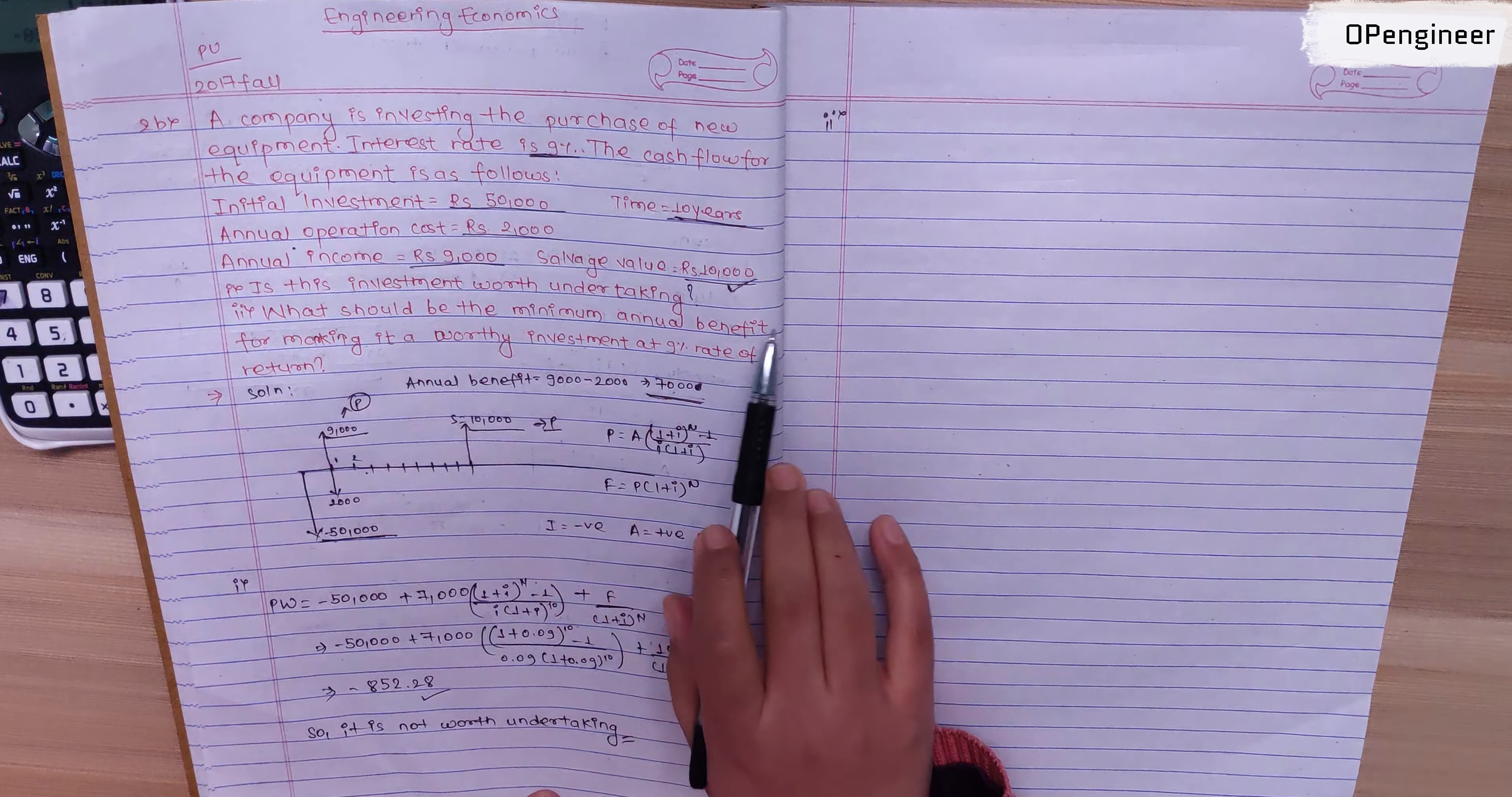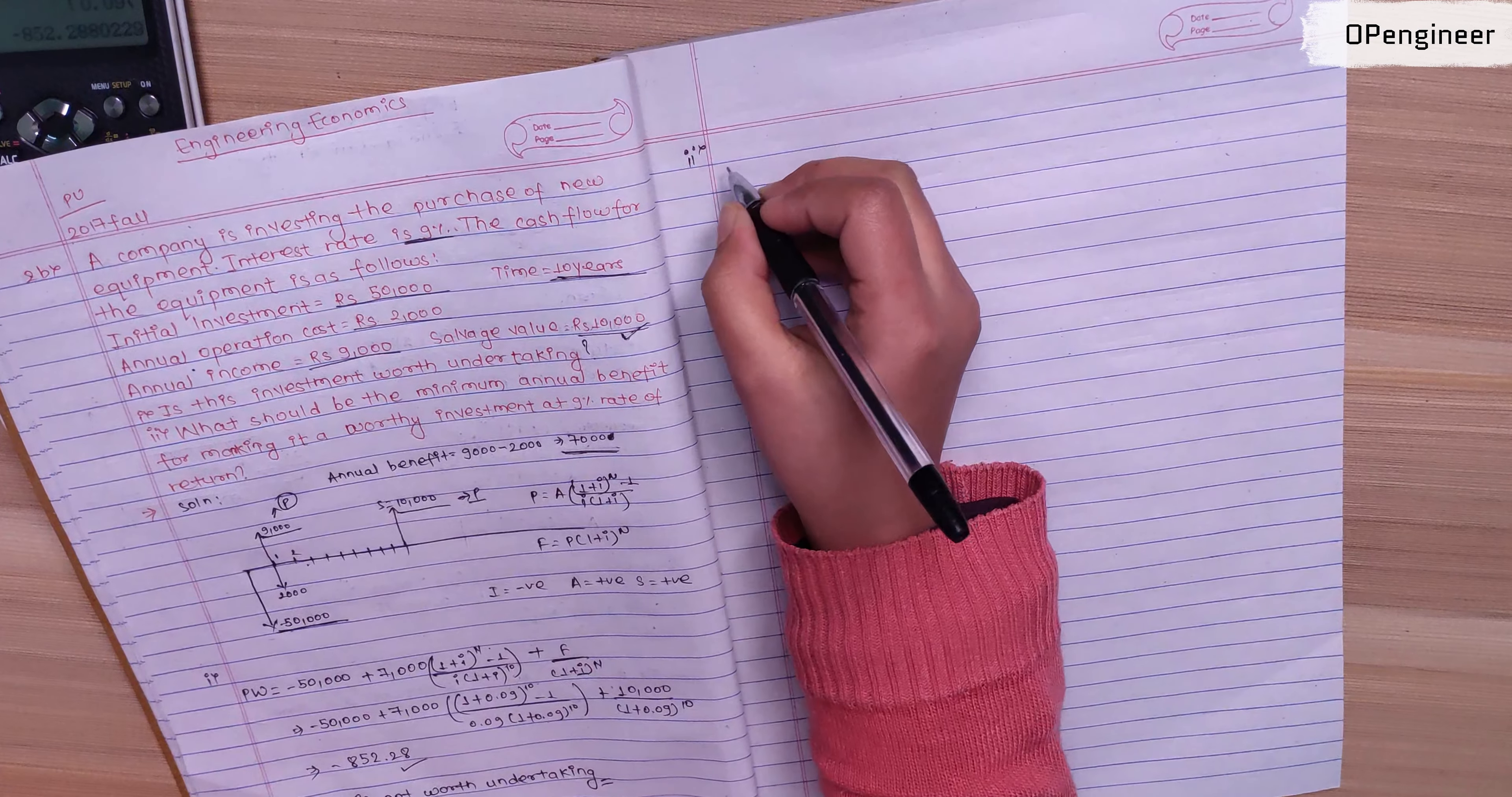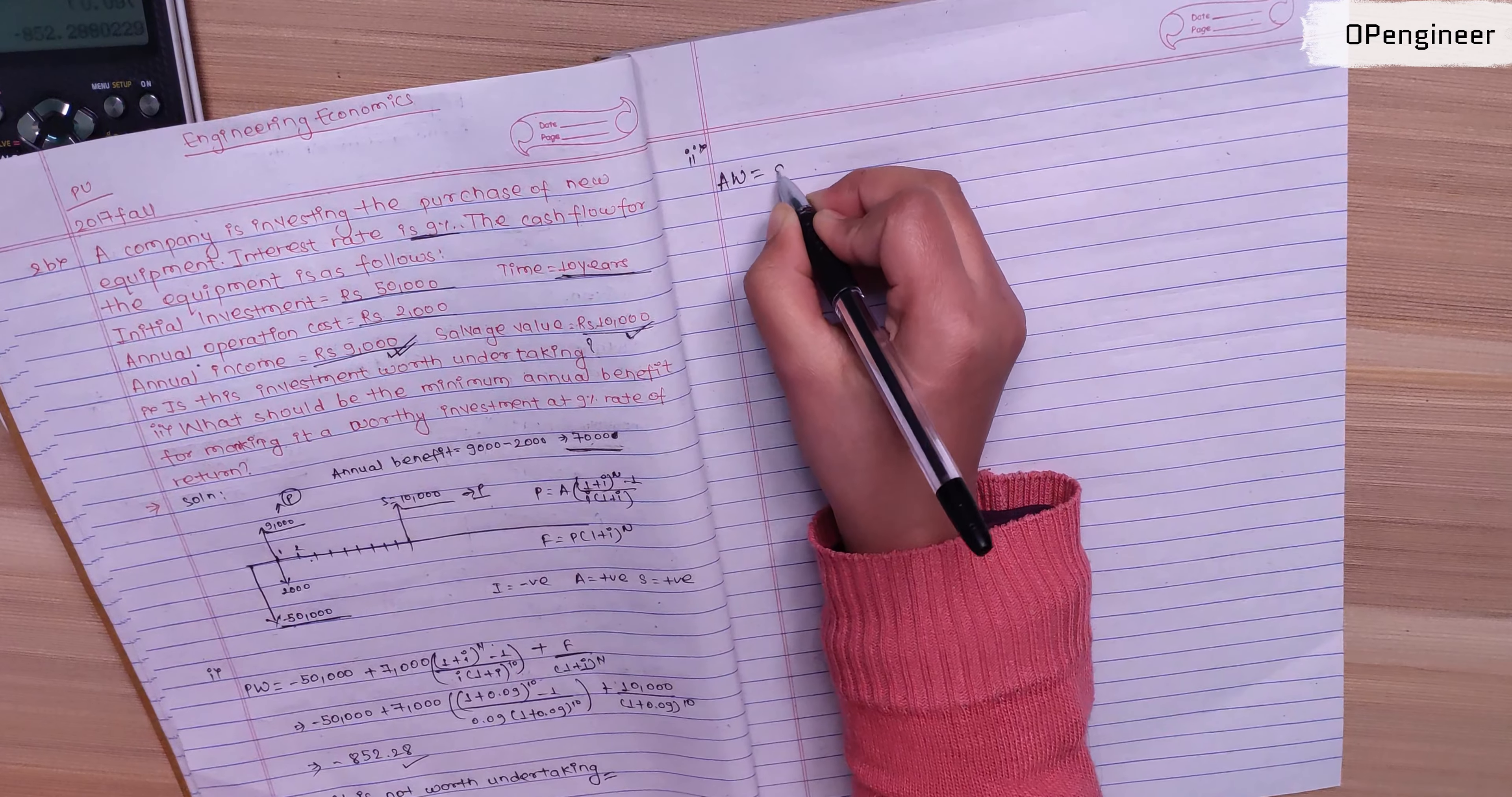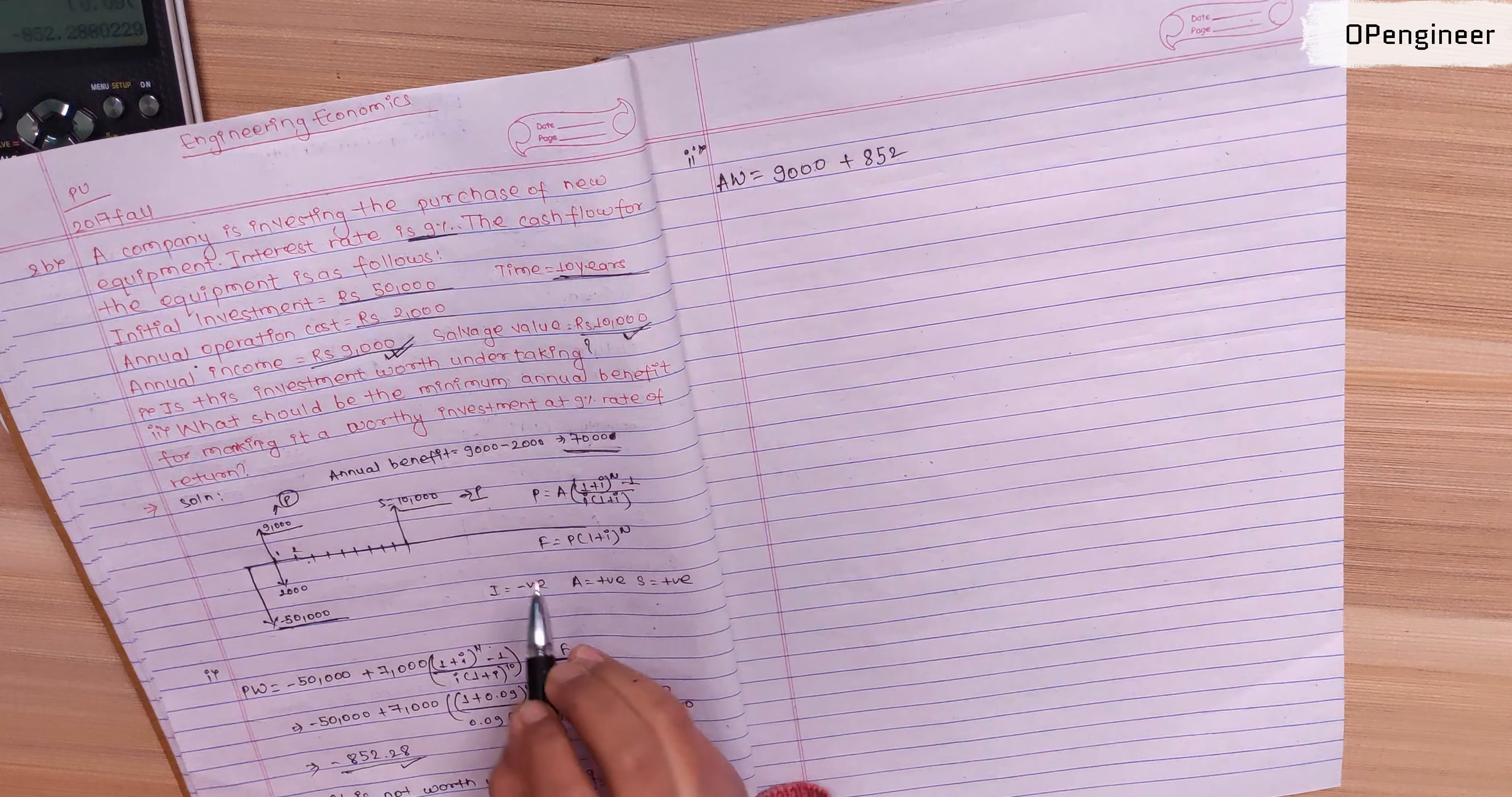What should be the minimum annual benefit for making it a worthy investment at 9% rate of return? The annual worth equals the annual benefit plus the present worth of minus 852.